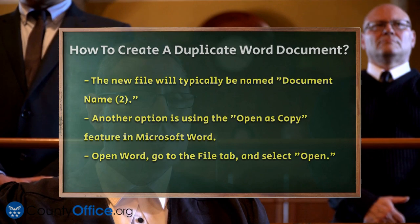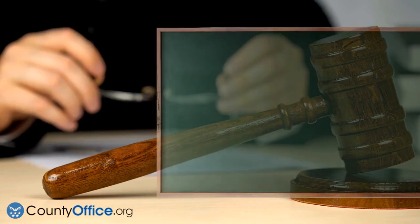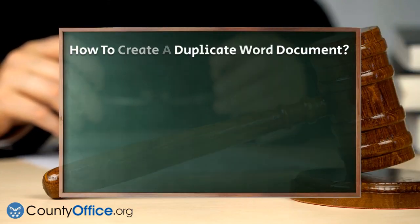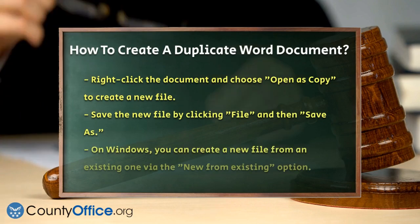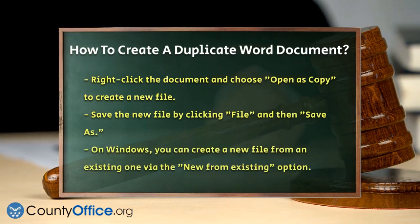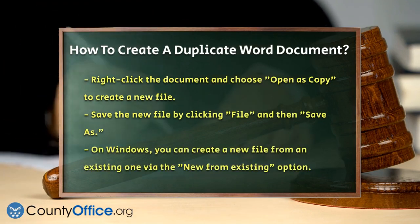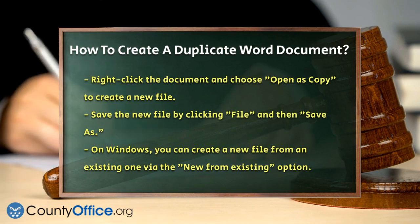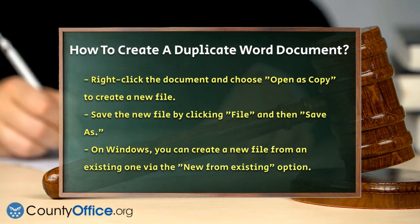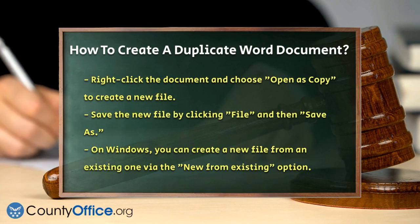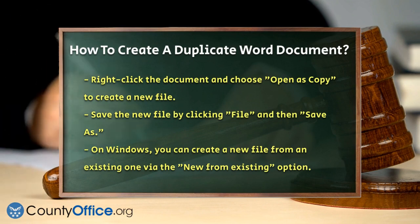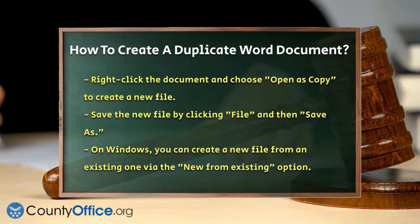If you prefer to work directly within Word, you can also create a new file from an existing one. Open the Word document you want to duplicate, click on the File tab, and then click on New. In the right panel, select New from Existing and choose the file you want to make a copy of. Click Create New to open the copy, and then save it using the Save or Save As option.